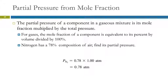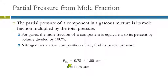For gases, the mole fraction is the same as the percent by volume divided by 100. So if nitrogen is 78% of air, the mole fraction is 0.78, because the volume of a gas is directly proportional to the number of moles. If we know the percent composition and the total pressure, we can find the partial pressures for each individual gas in the mixture.